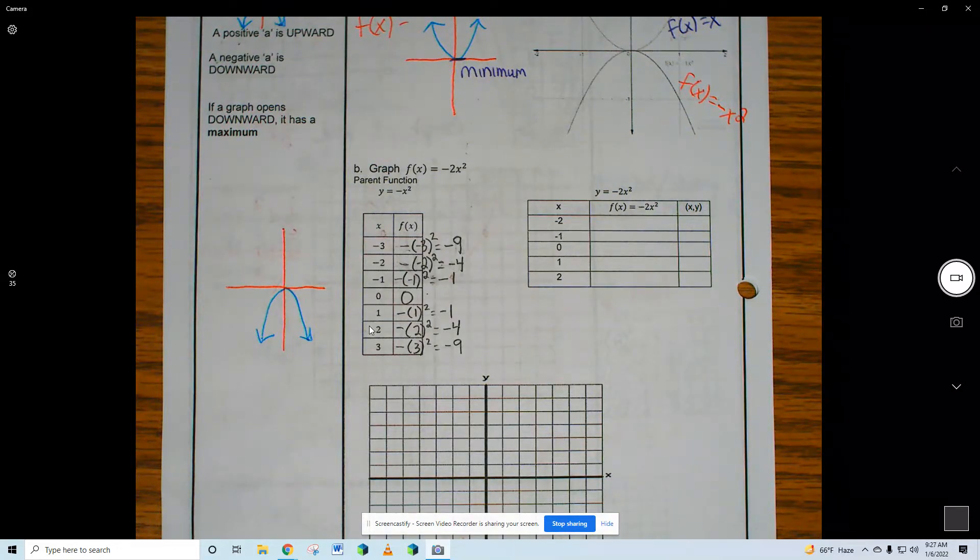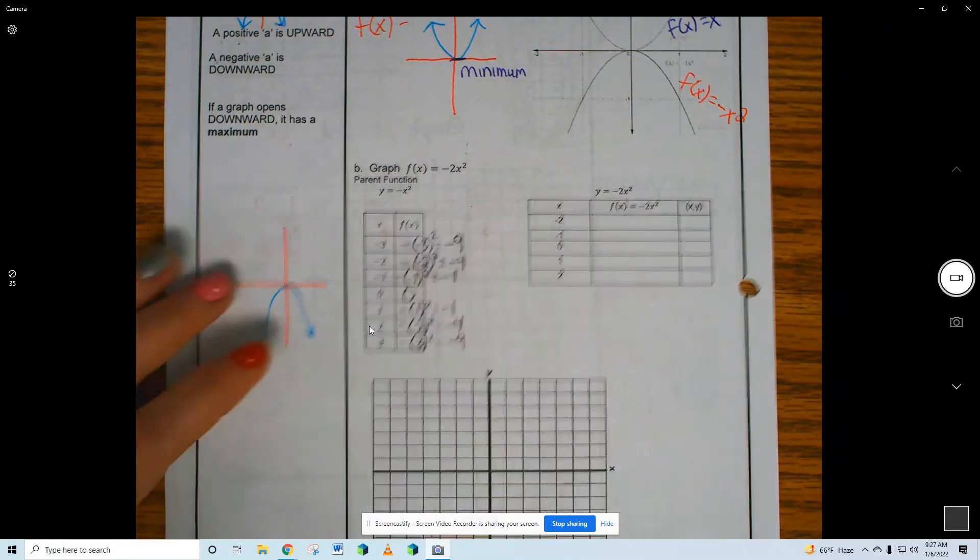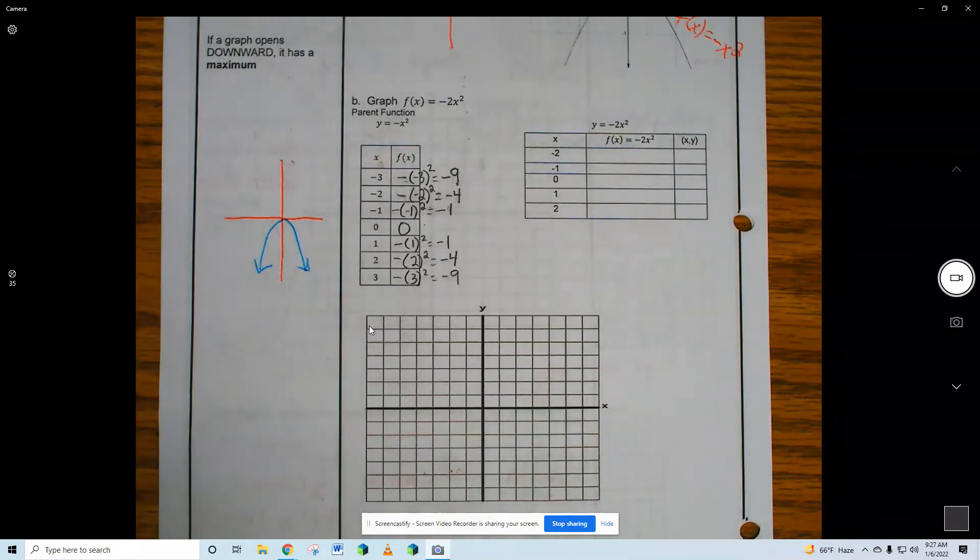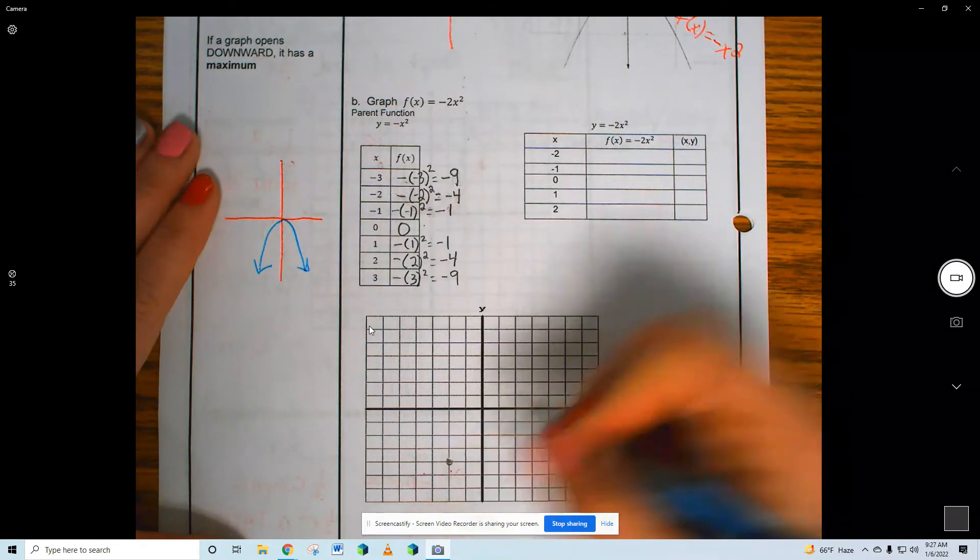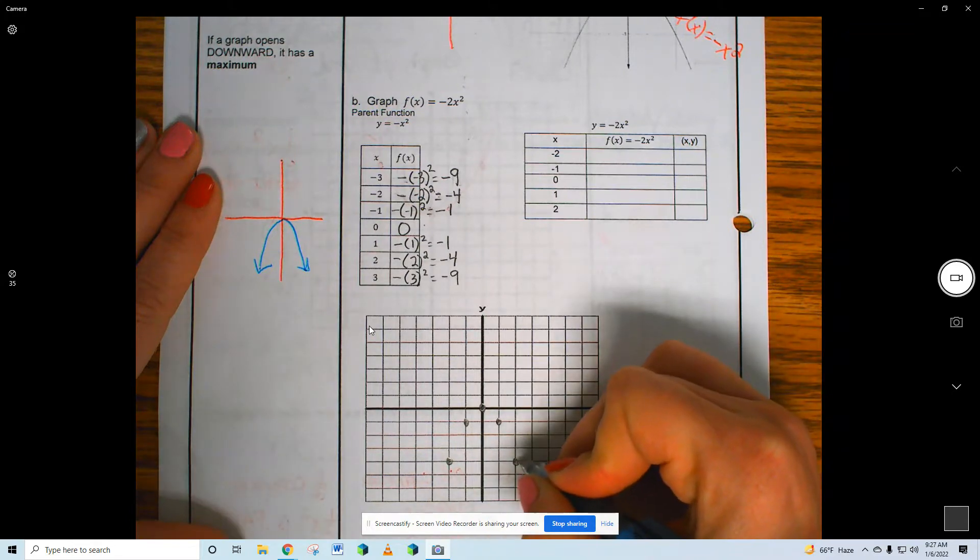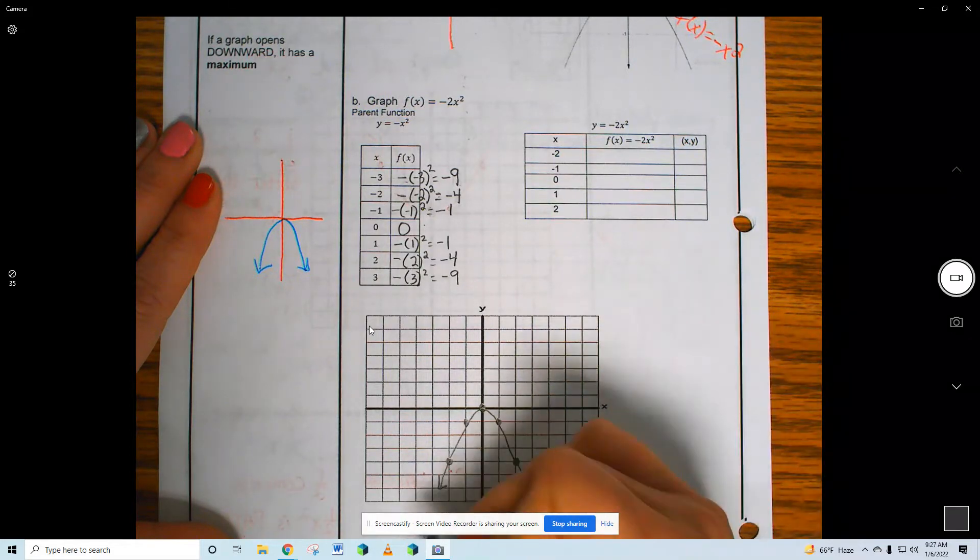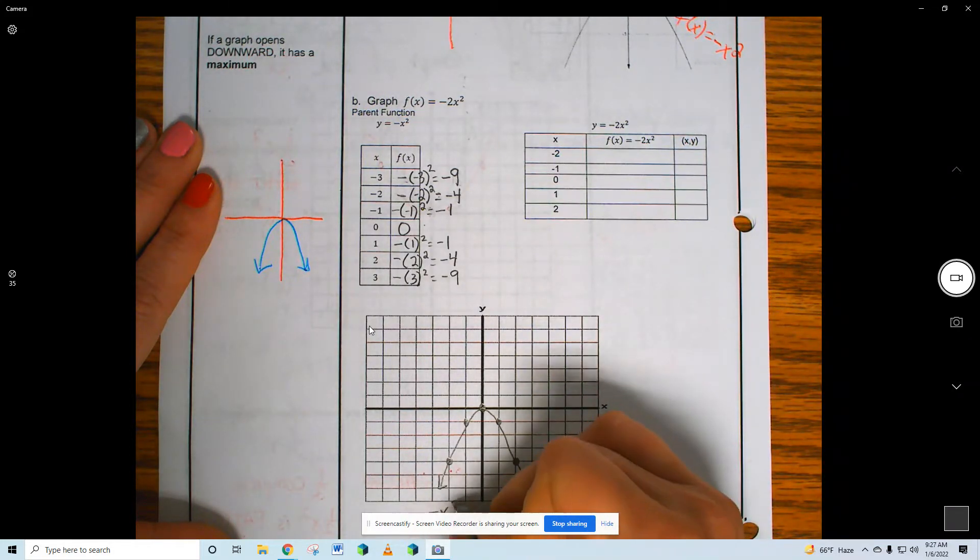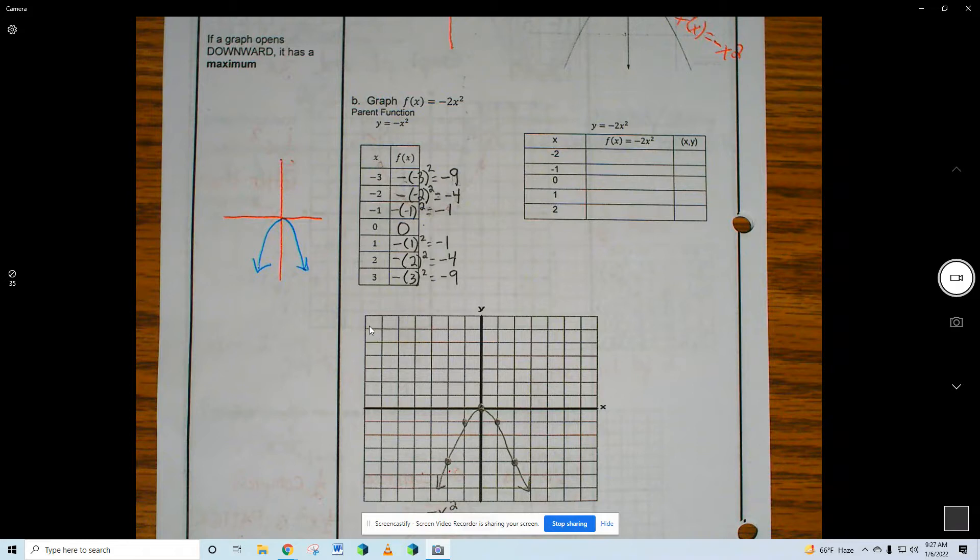I don't have enough space in my graph for 9, but I can do the 4's. So negative 2, negative 4. Negative 1, negative 1. 1, negative 1. 2, negative 4. So this is downward facing. It's the same ordered pairs, but just flipped across the X-axis, reflected across the X-axis.